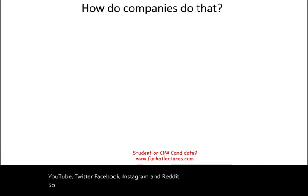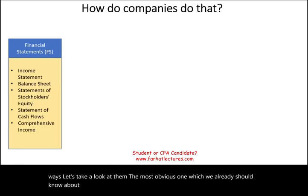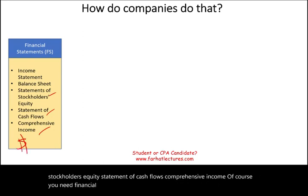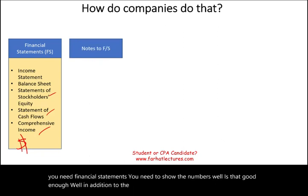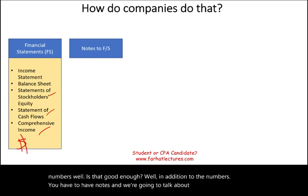So how do companies communicate the information? There are many ways. The most obvious one, which we already should know about, is financial statements — income statement, balance sheet, statement of stockholders' equity, statement of cash flows, comprehensive income. You need financial statements; you need to show the numbers. But is that good enough? In addition to the numbers, you have to have notes, and we're going to talk about those in this session. Under the notes, we give users accounting policies: which inventory method you are using, how you are computing fair value, how you are treating property, plant, and equipment, contingencies, and other things.